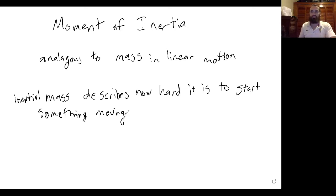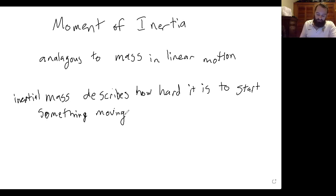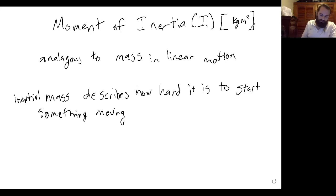If you have something that's very massive, you would need to impart a large force to it to make it have the same acceleration as an object that's much less massive. Moment of inertia is similar, and it is represented by the capital letter I. It has units of kilogram meters squared. If mass describes how hard it is to get an object to start moving, moment of inertia describes how hard it is to get something to rotate.